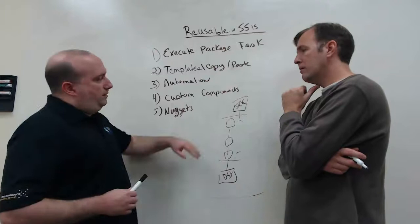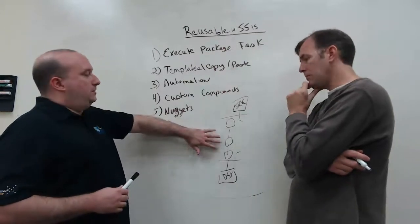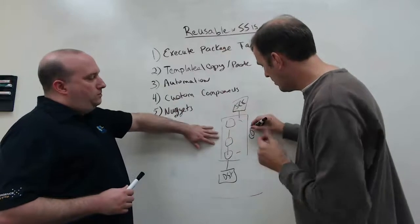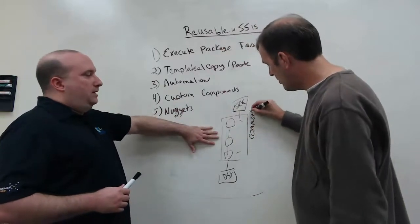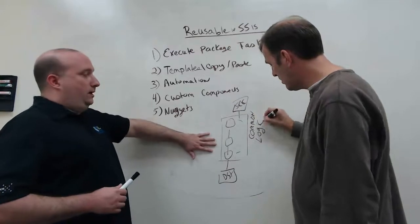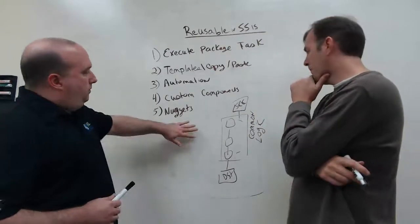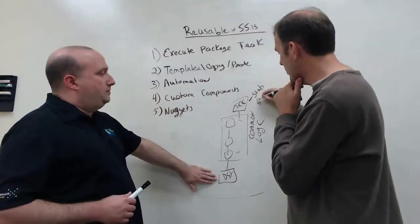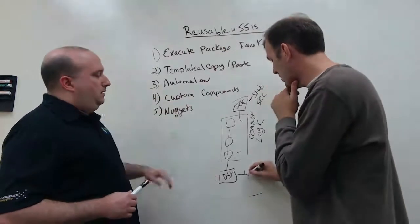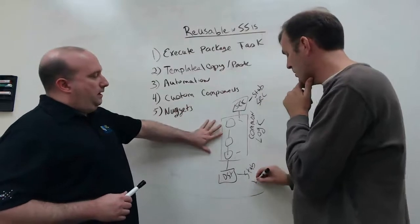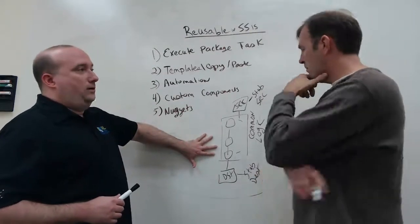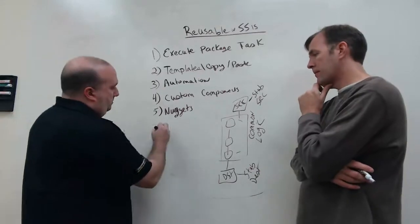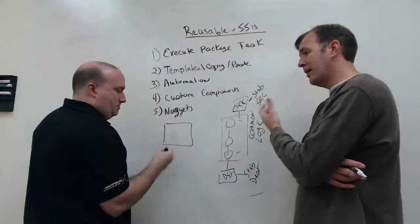Effectively what a nugget lets you do is say, I've got this chunk of transformations. These are going to be common. I'm going to use these in tons of data flows. I know that I'm going to have some updates to these. Maybe they're not something that will lend themselves to doing a custom component for. Okay. So, what I can do in a nugget is use a special placeholder source and a placeholder destination. And I define my set of components here between those.